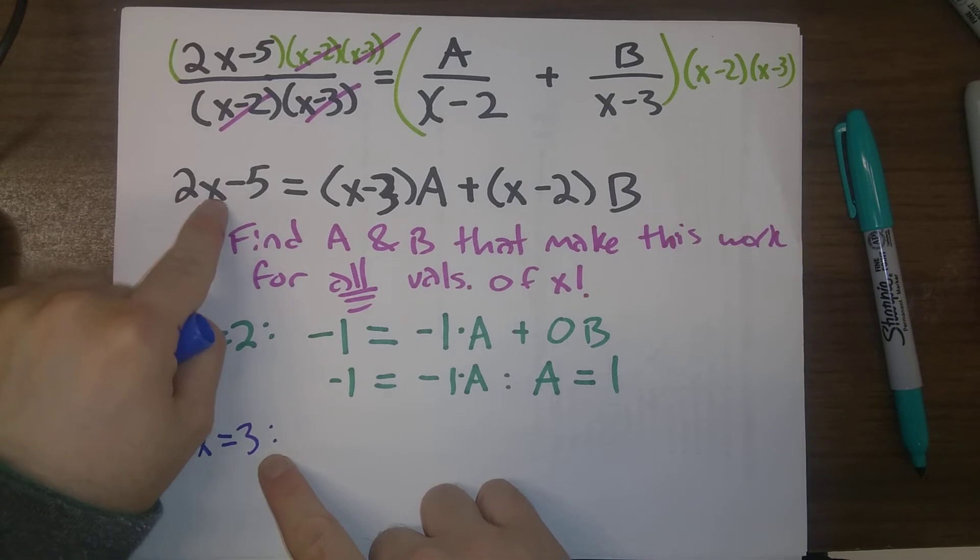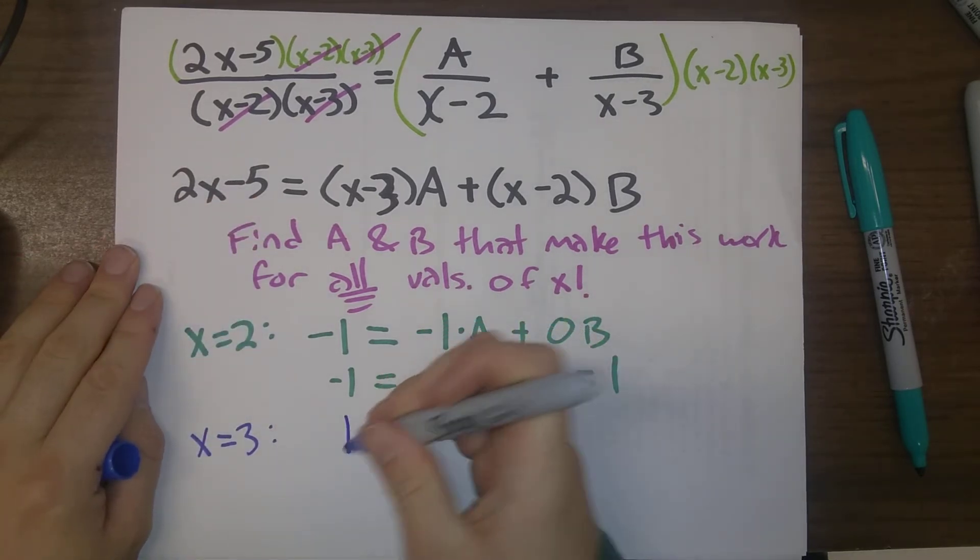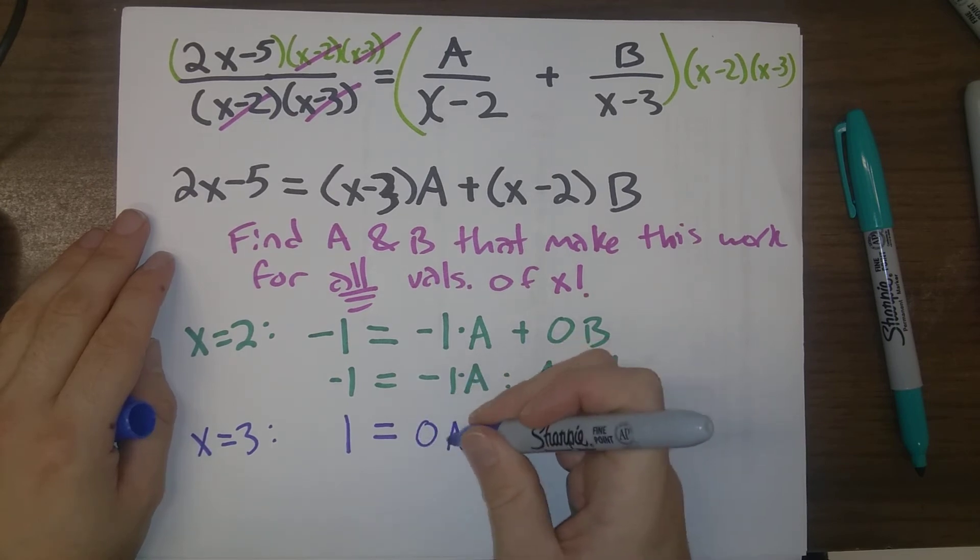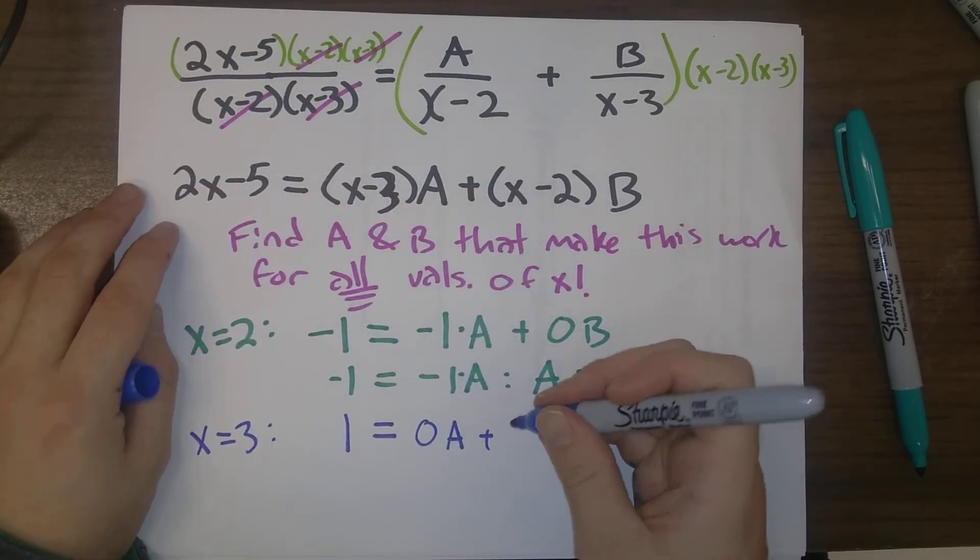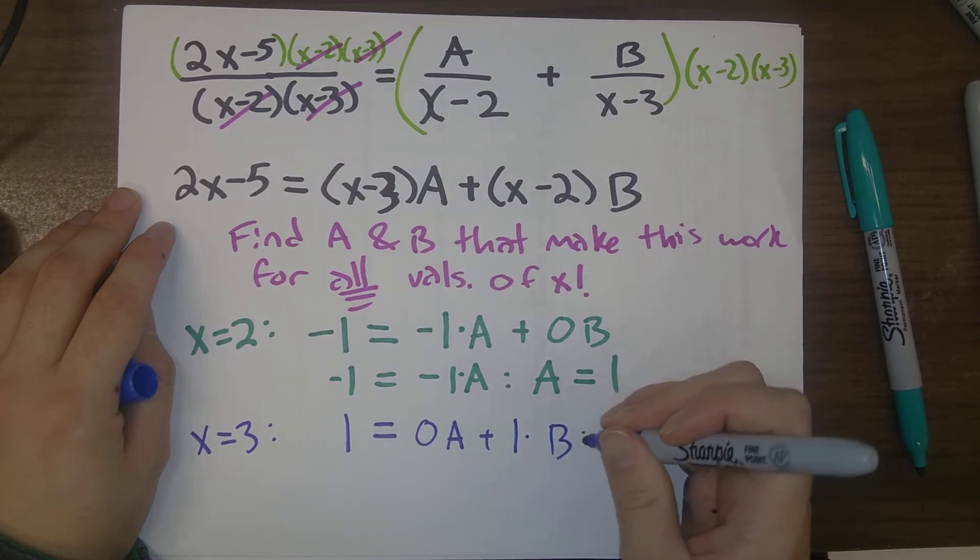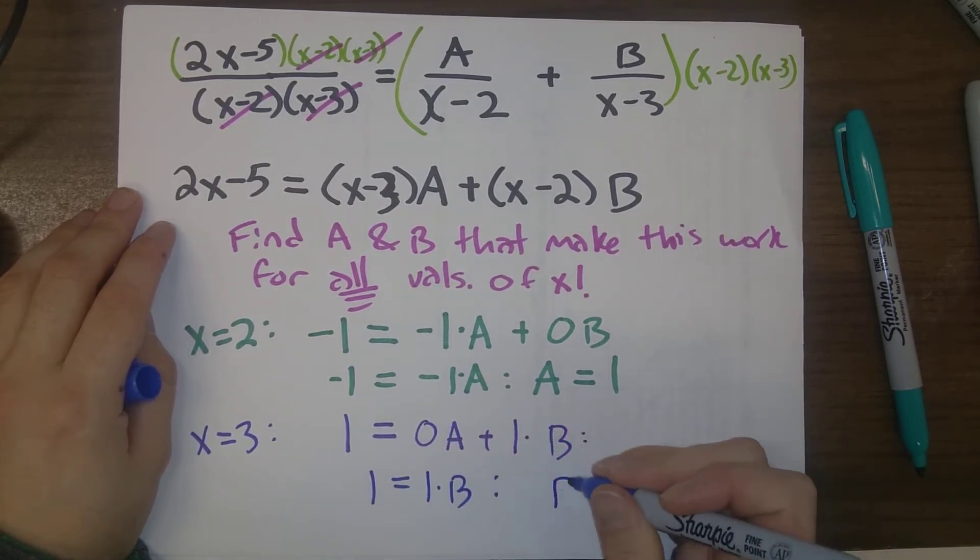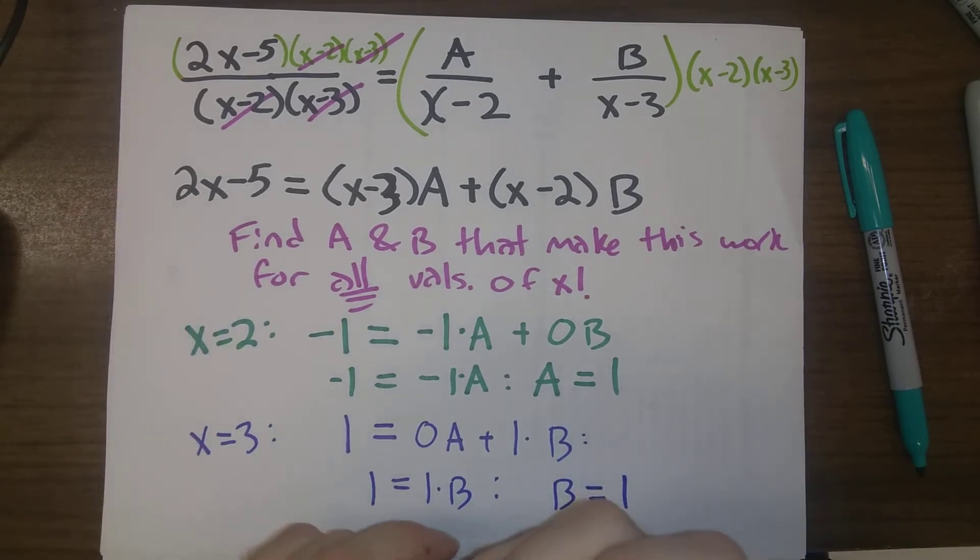So x equals 3. 2 times 3 is 6 minus 5 is 1. It's equal to 3 times 3 minus 3 is 0A, plus 3 minus 2 is 1 times B. So this is the equation 1 equals 1 times B. And so we also see that B is equal to 1.